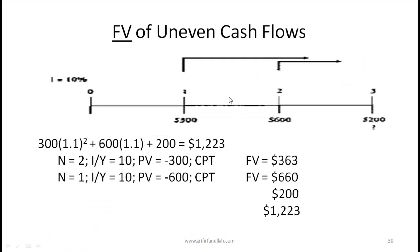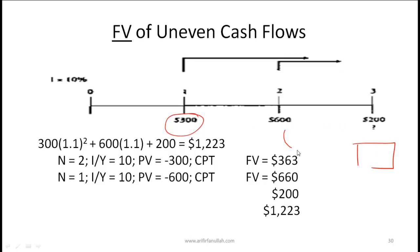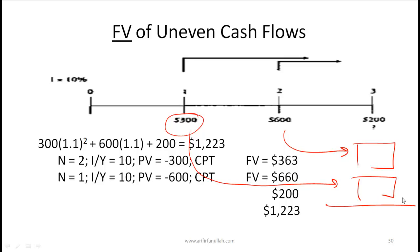For uneven cash flows when finding the future value: take each cash flow — say 300, 600, and 200 — calculate the future value of each individually, and then simply add them all up: 200 plus the future value of 600 plus the future value of 300.